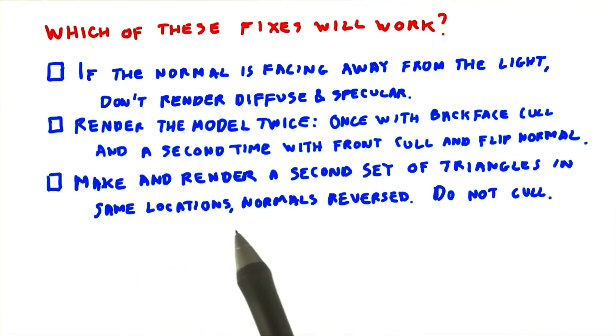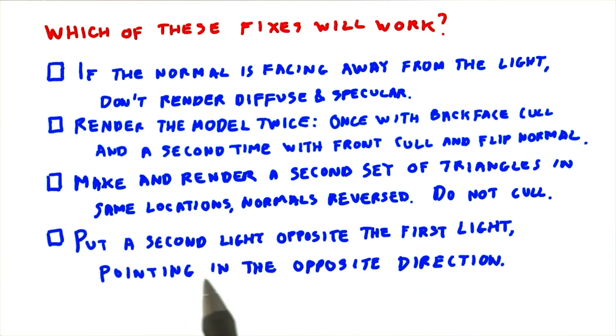Make and render a second set of triangles in the same locations, but with their normals reversed. Do not cull. Put a second light opposite the first light, pointing in the opposite direction.